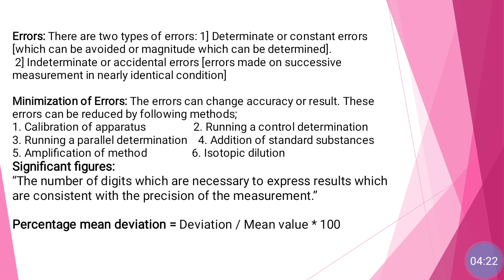These indeterminate errors can change the accuracy of results. When we are performing titrations and determining quantity, accurate results are needed. So these errors can be reduced by following certain methods. The first method is calibration of apparatus.